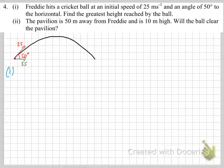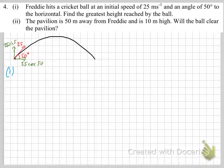We do it the old fashioned way. We split the initial velocity into its components: 25 cos 50 and 25 sin 50.